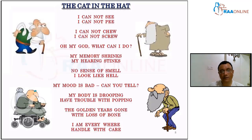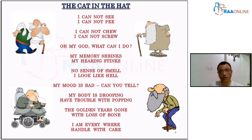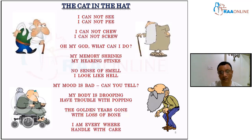I have created a poem describing what geriatric patients tell us when they come for surgery: 'I cannot see, I cannot pee, I cannot chew, I cannot screw — oh my God, what can I do? My memory shrinks, my hearing stinks, no sense of smell, I look like hell, my mood is bad, can you tell? My body is drooping, I have trouble with pooping, the golden years gone with loss of bone — I am frail, handle me with care.' This poem illustrates how carefully geriatric patients must be managed during anesthesia.